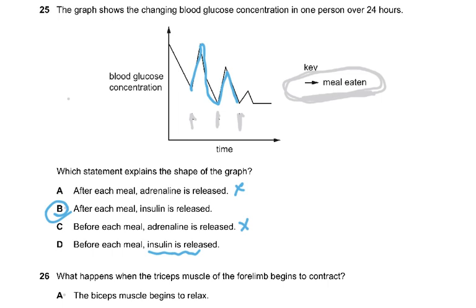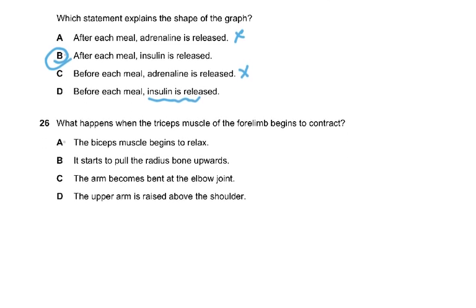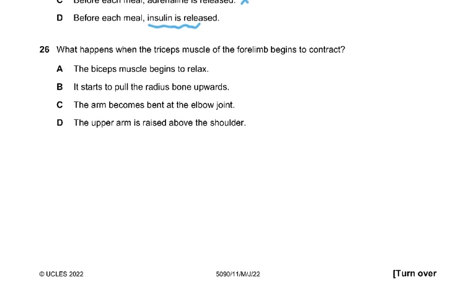Question number 26: what happens when the triceps muscle of the forelimb begins to contract? Triceps contract, the bicep will begin to relax. The other options are wrong: it does not pull the radius upward, the arm becomes straightened not bent, and the upper arm is not raised above the shoulder joint. Triceps contract to straighten the arm at the elbow joint.